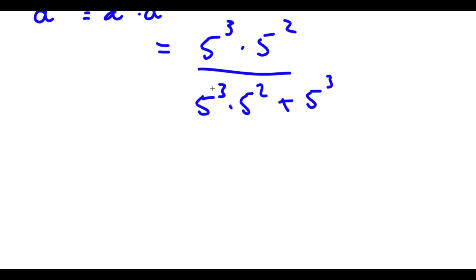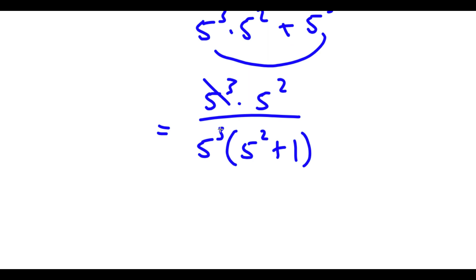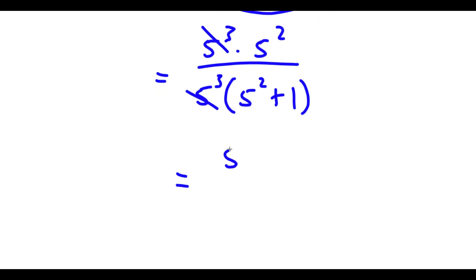Now, for our denominator, because both terms here have 5 to the power of 3 in them, I'm going to factor out 5 to the power of 3. So now I have 5 to the power of 3 times 5 to the power of 2 plus 1. Now, these two 5 to the power of 3s can simply cancel out, so I'll be left with 5 to the power of 2 over 5 to the power of 2 plus 1.